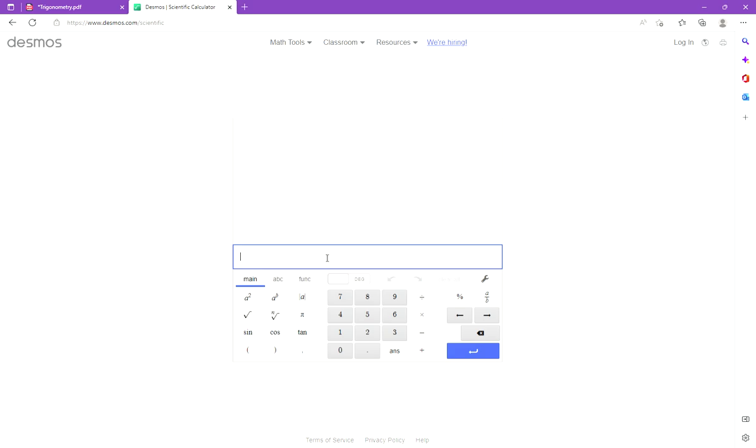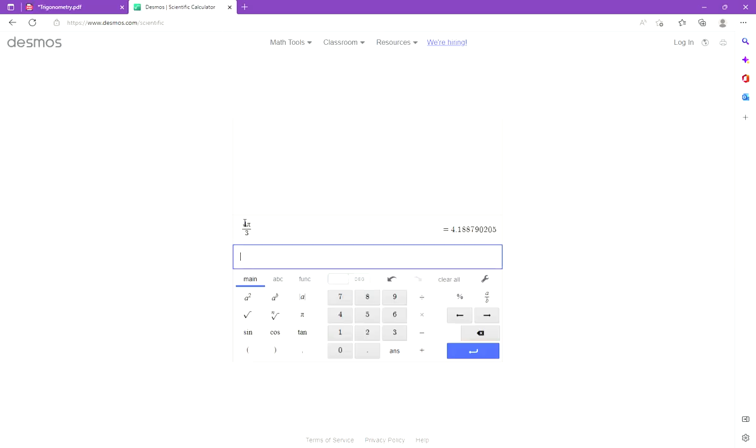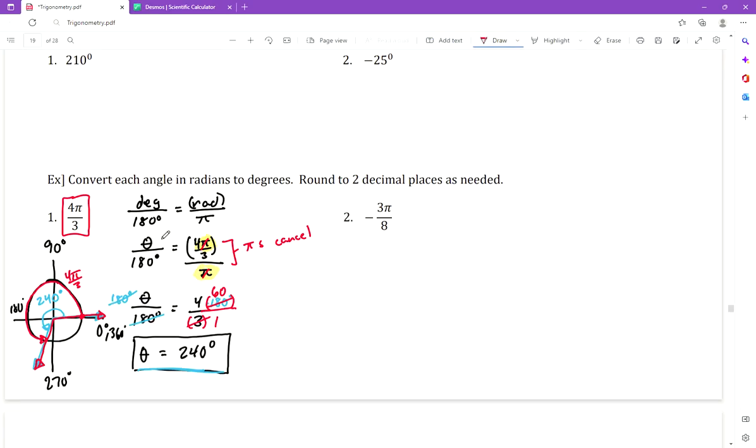If you have a handheld calculator the π button is somewhere on there and you just type it in exactly as shown: 4π divided by 3 is 4.19. That would be our decimal if we needed to round it. I'm just typing in exactly as you see it. I'm not even going to write it on the paper.